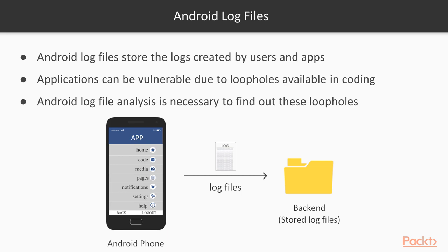Android machine apps can be vulnerable due to loopholes available in coding. For example, if an app contains a user's username, password, and card information, and that app is vulnerable, then when the app creates logs inside the Android machine those logs may expose secret user credentials in plain text. Generally Android apps use encryption, but if there is a vulnerability, data may be written in plain text.